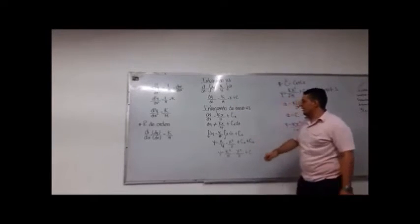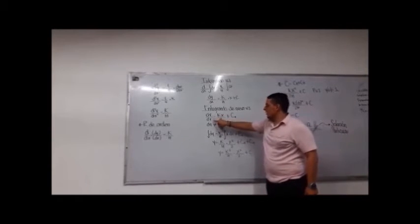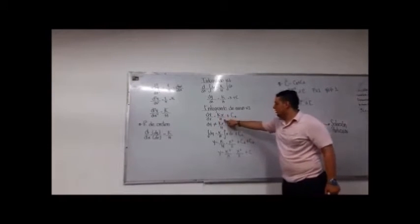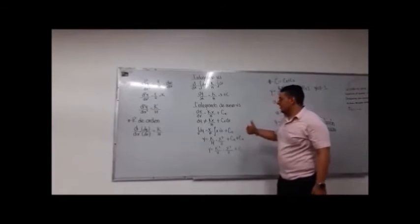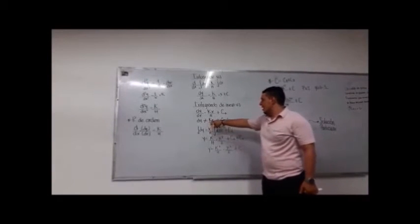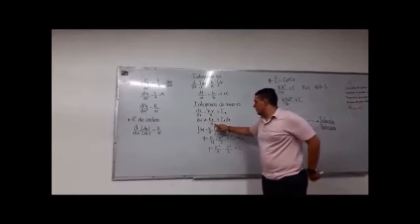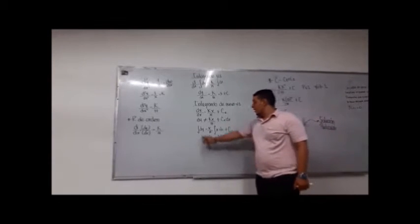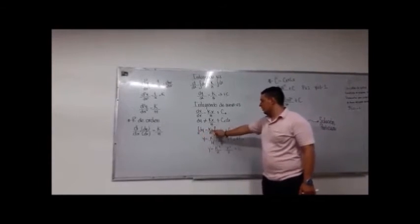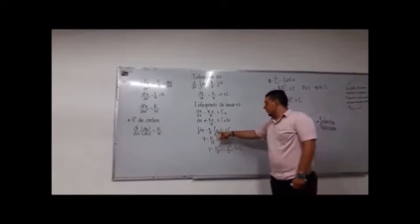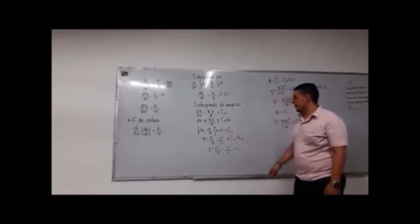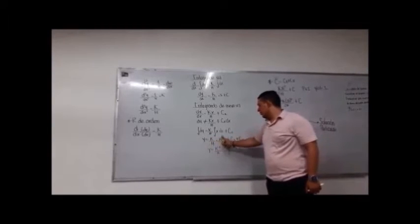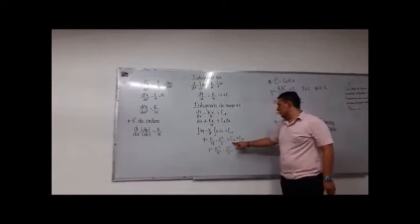Entendiendo que dy/dx sobre h más c1, la derivada de y no es igual sino que dy/dx es igual a k por x sobre H más c1, por dx. La integral de y es igual a la constante k sobre H, integral de x por dx más c1. Entonces: y es igual a k sobre H por x al cuadrado sobre 2, más c1x más c2.